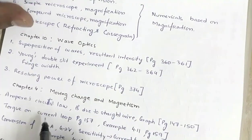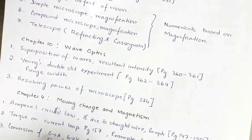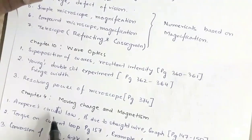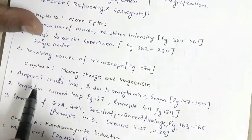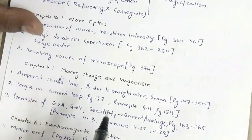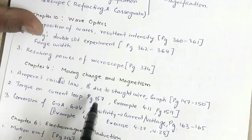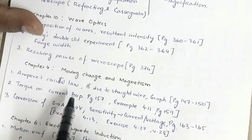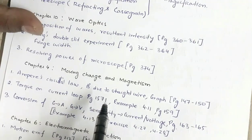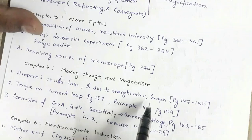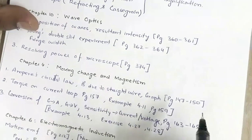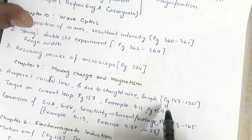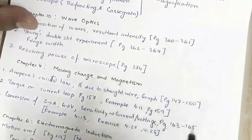Next is Chapter 4, Moving Charges and Magnetism. Here you have Ampere's Circular Law and its application for evaluation of magnetic field due to a straight wire, along with the graph of variation of magnetic field with distance from the straight wire. This is given on page numbers 147 and 150.